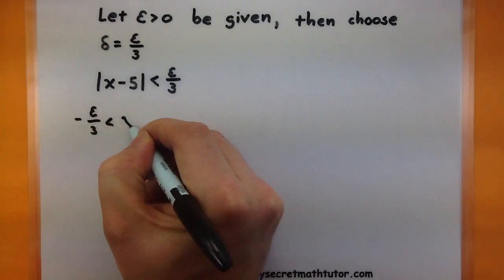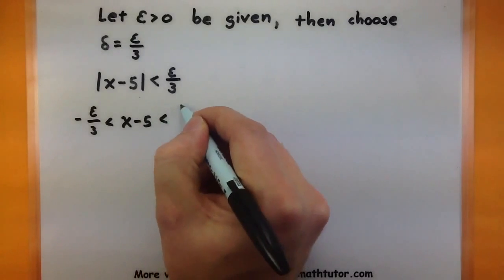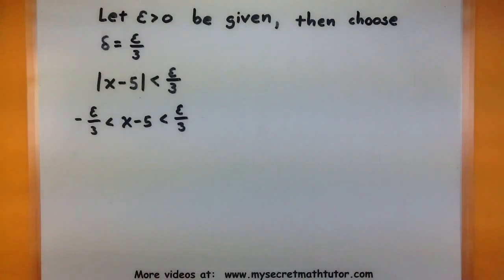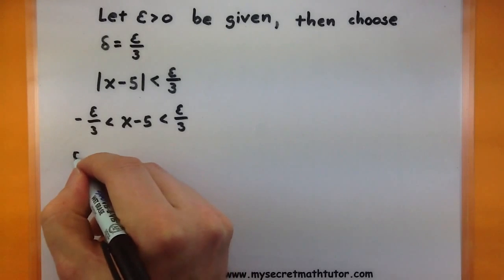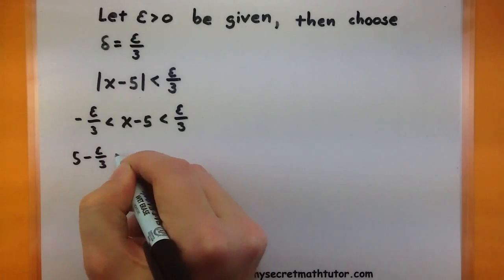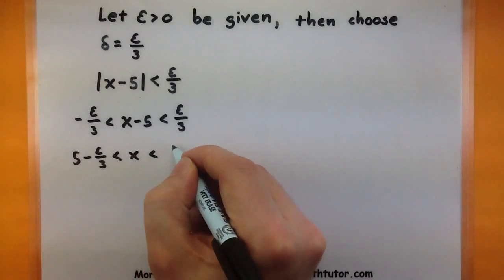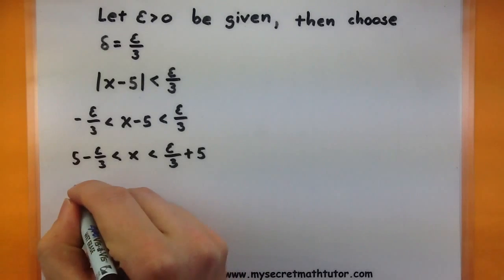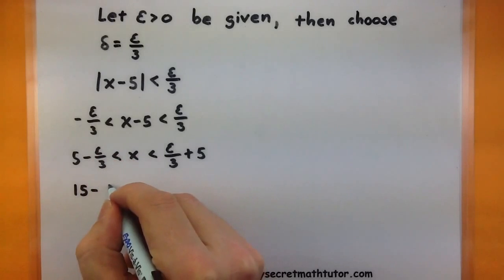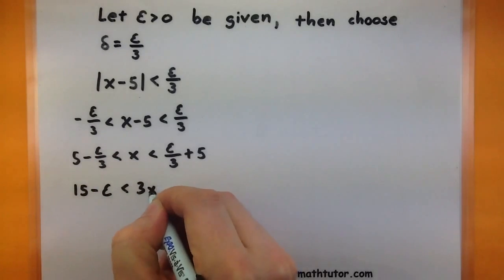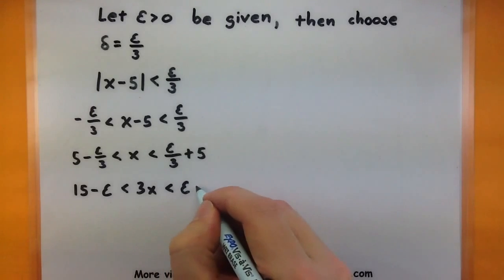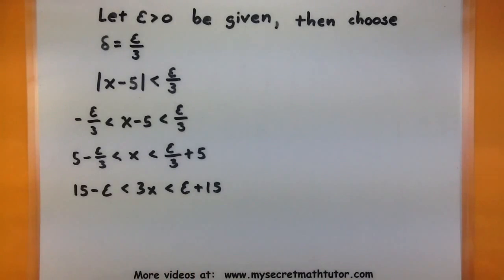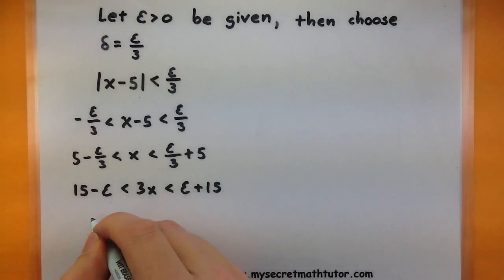So I'm breaking apart my absolute value. Maybe add 5 to everything. There we go, looking better.